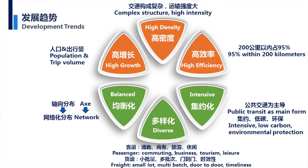The third trend is high efficiency. For the future clusters in China, we have big demand. For long distance and short distance travel, shorter than 200 kilometers will be the major demand, so we need to focus on that travel demand for less than 200 kilometers. The fourth trend is balanced. For China's western clusters, they are still monocentric and they will become more mature — they will become polycentric, so demand will be more balanced, and transport demand will also be more balanced.